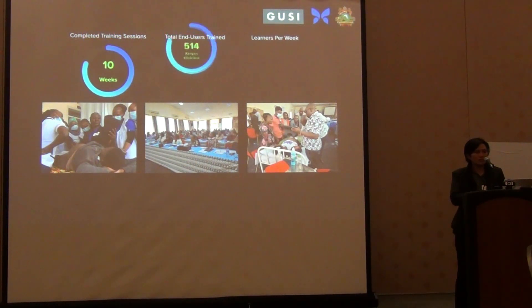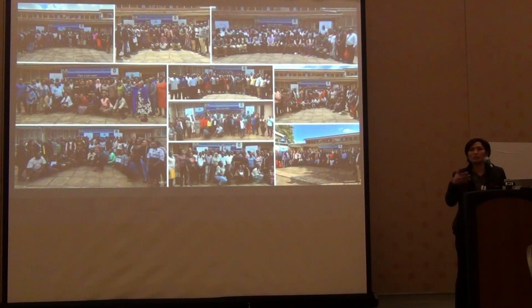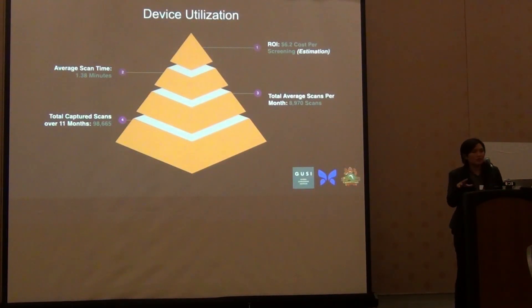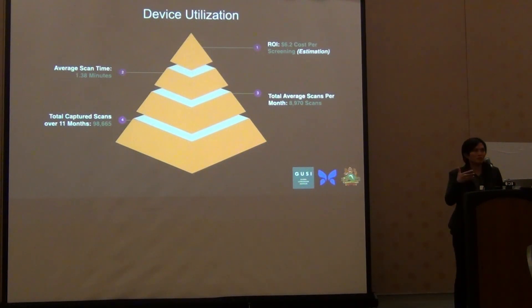Over the course of 10 weeks, over 500 clinicians were trained and given an ultrasound and tablet device. We then tracked over time — through research with Cliff Road — what kinds of diagnoses they were making and how useful the training was. Over the course of 11 months, almost 100,000 scans were done. Factoring in the cost of implementation and devices relative to the number of scans being done, it turned out to be close to $6 per scan — which, if you're thinking about impact from an investment standpoint, is remarkable. And this is just in the first year.